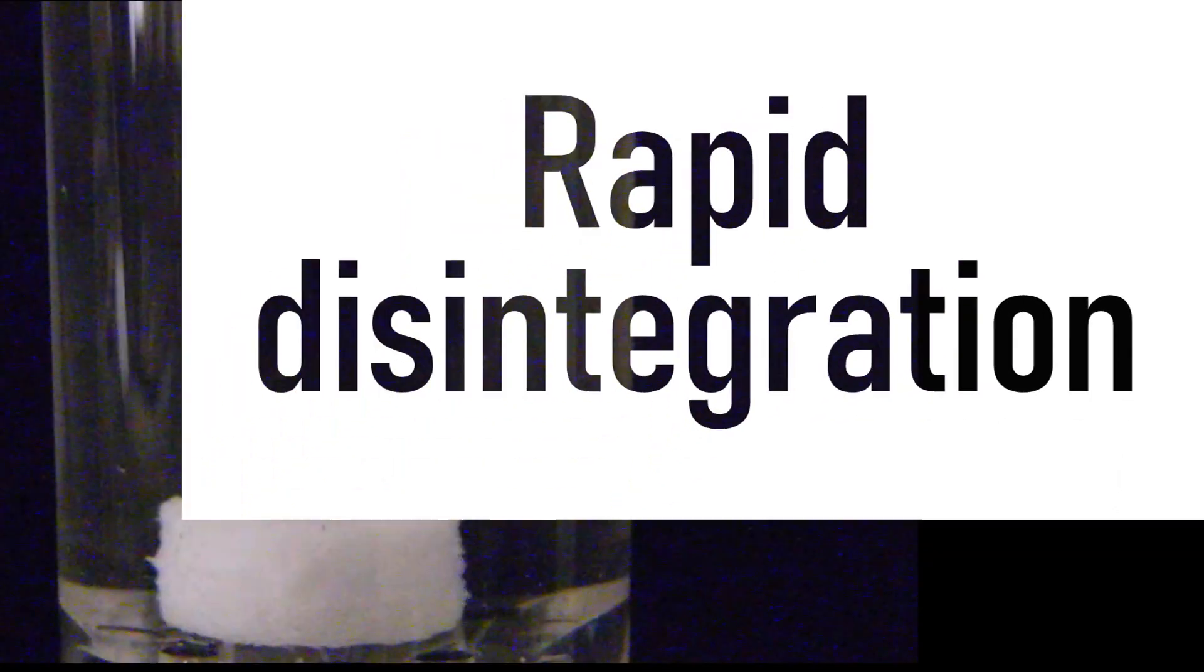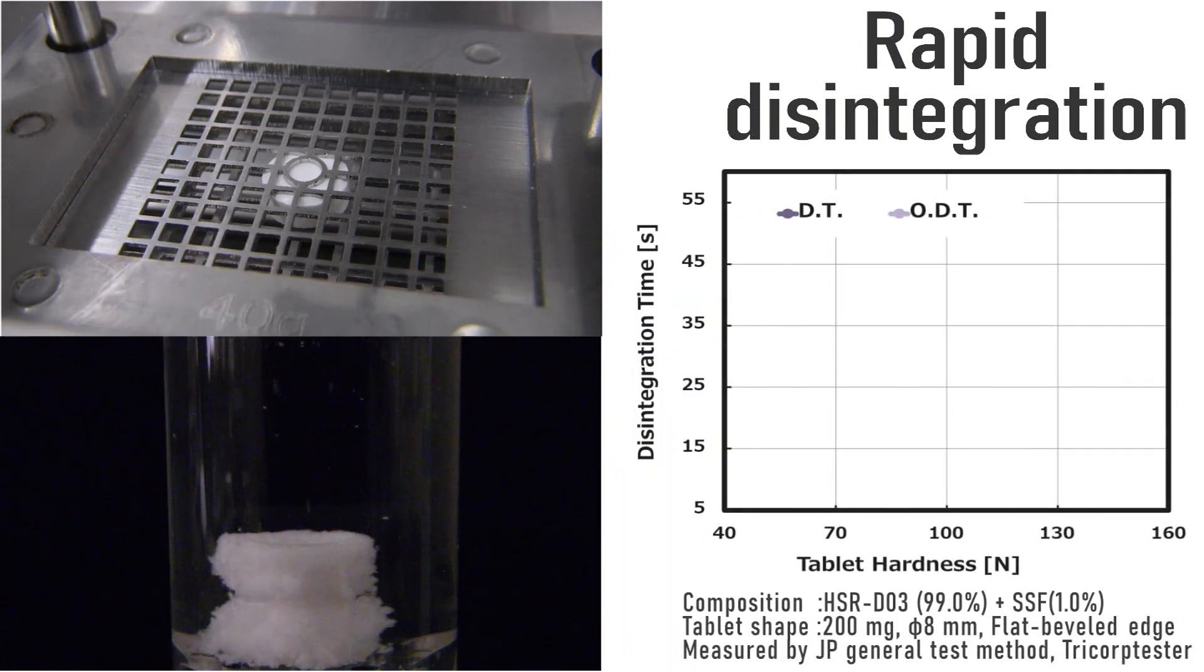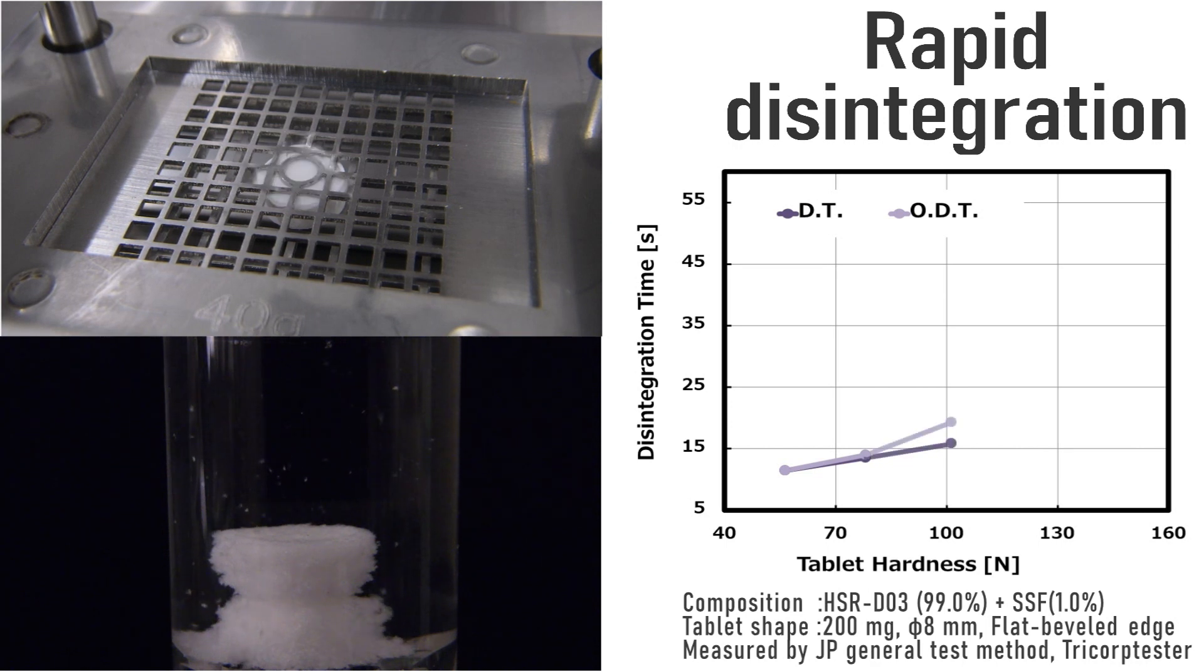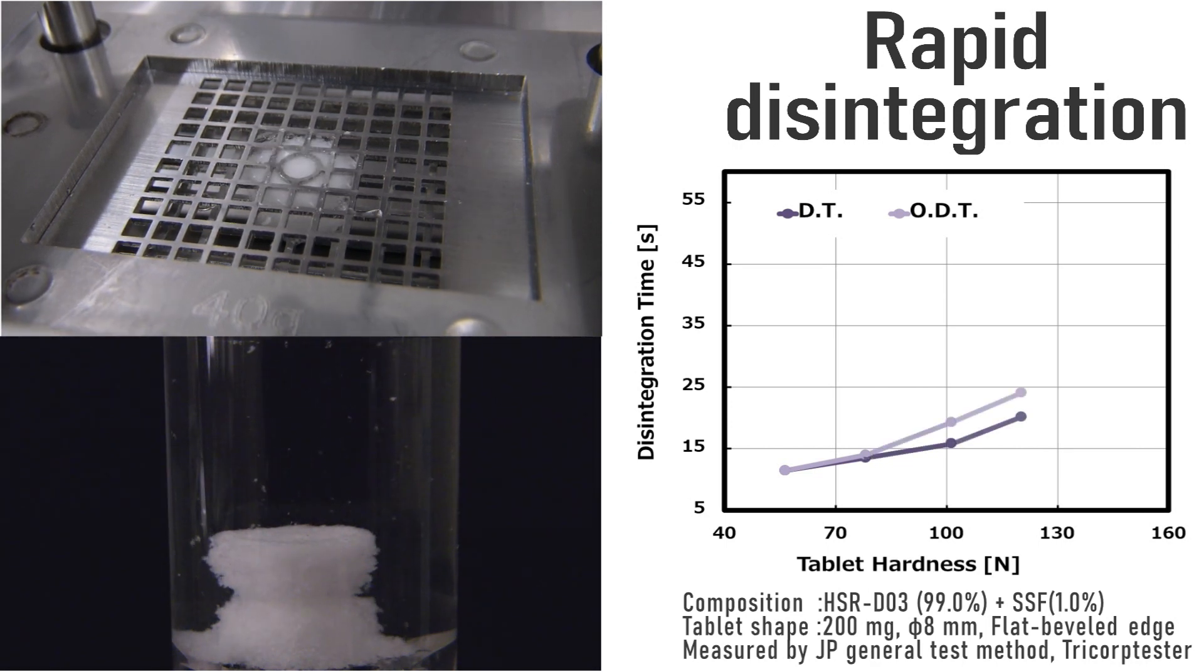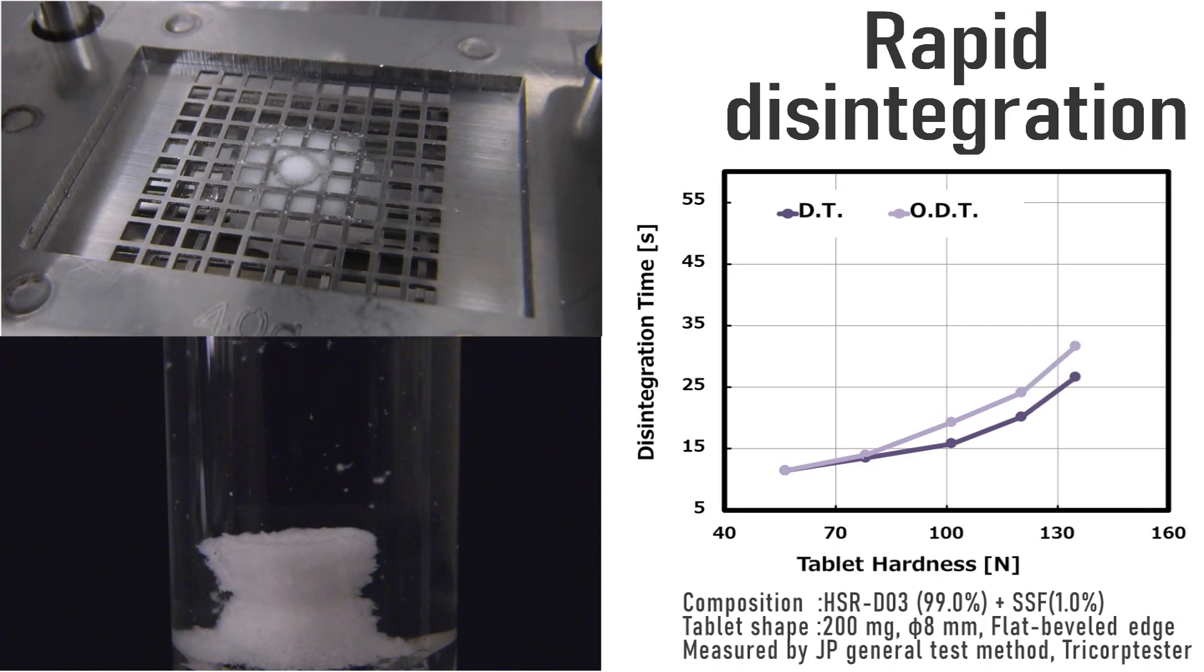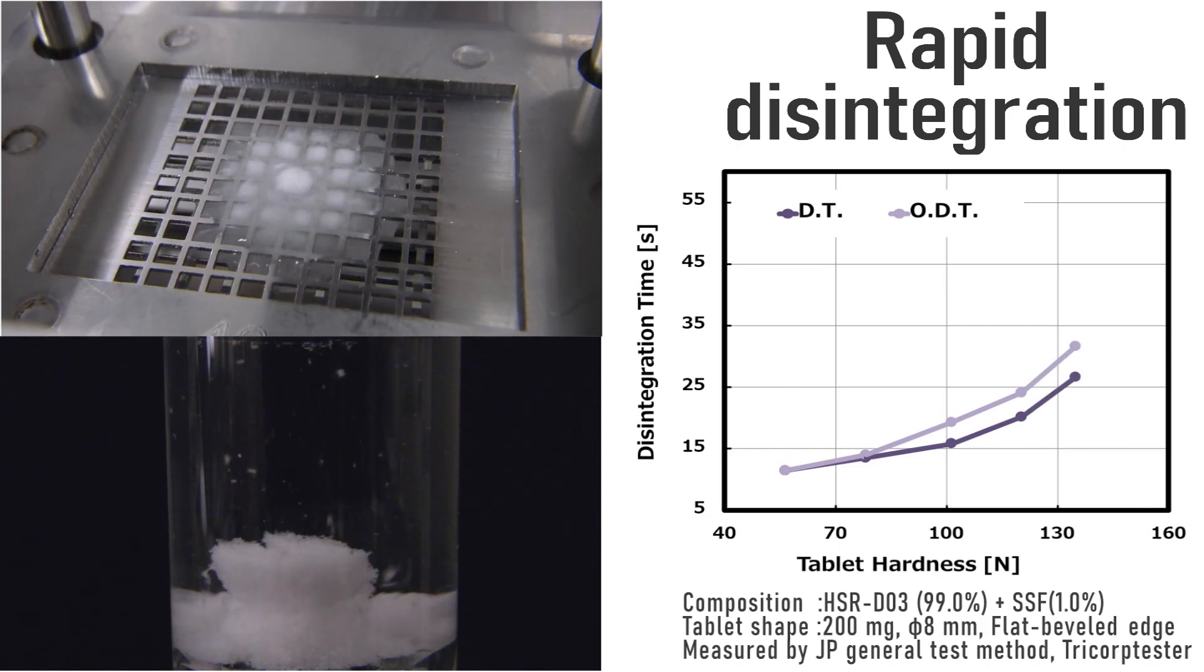HiSorad also provides rapid disintegration. Disintegration times are shown here. The vertical line shows disintegration time. The horizontal line shows tablet hardness. Even at tablet hardness of around 100 Newtons, the ODTs maintain short disintegration time less than 20 seconds.